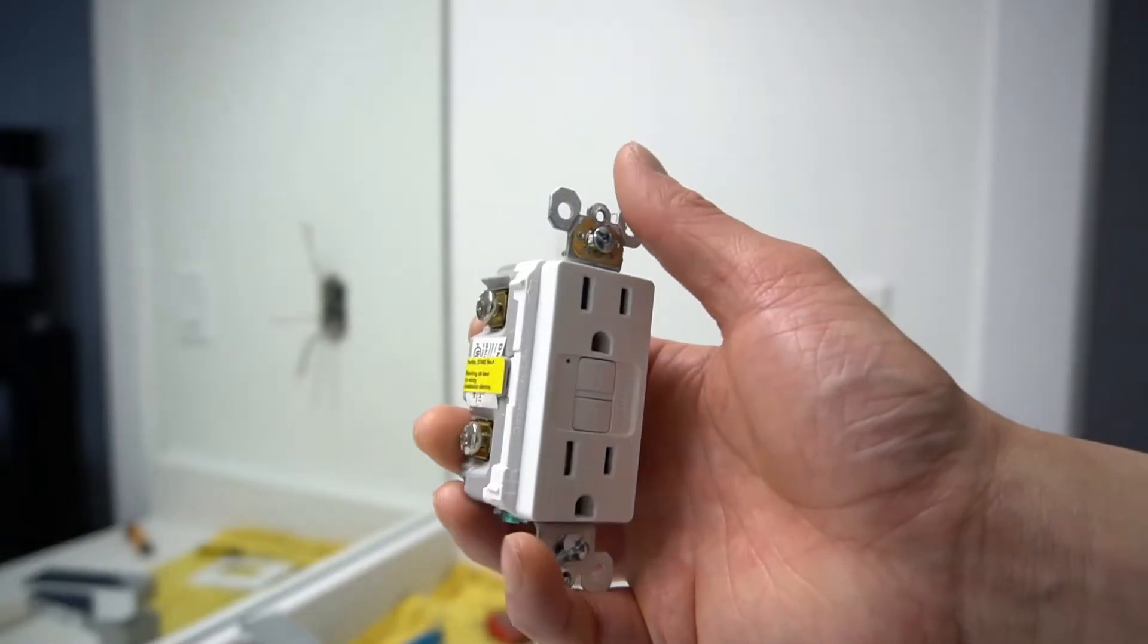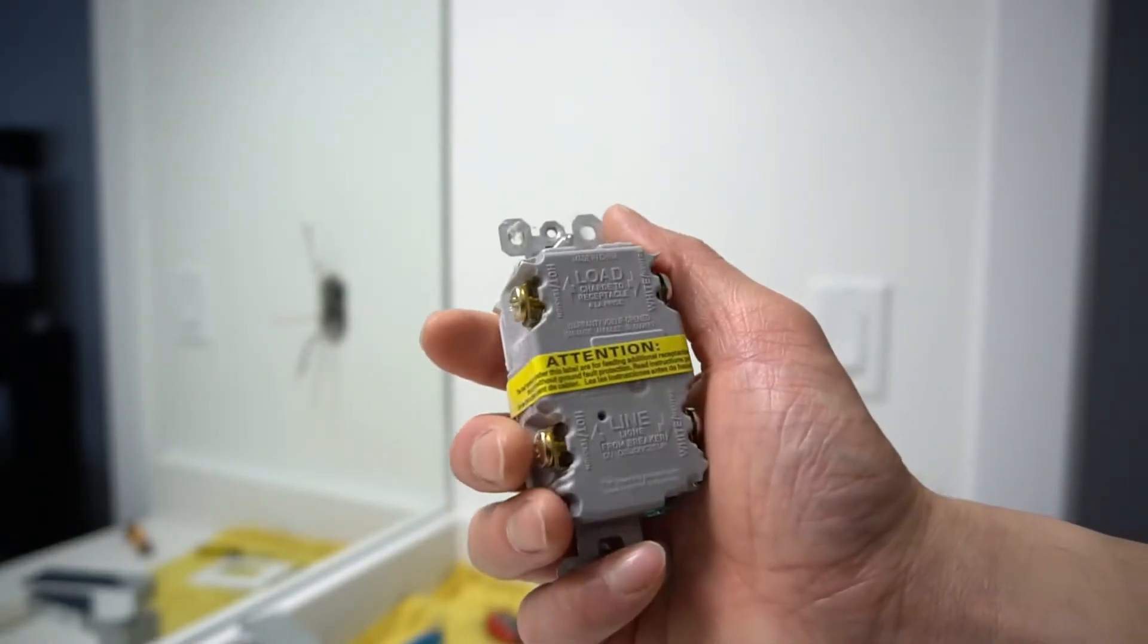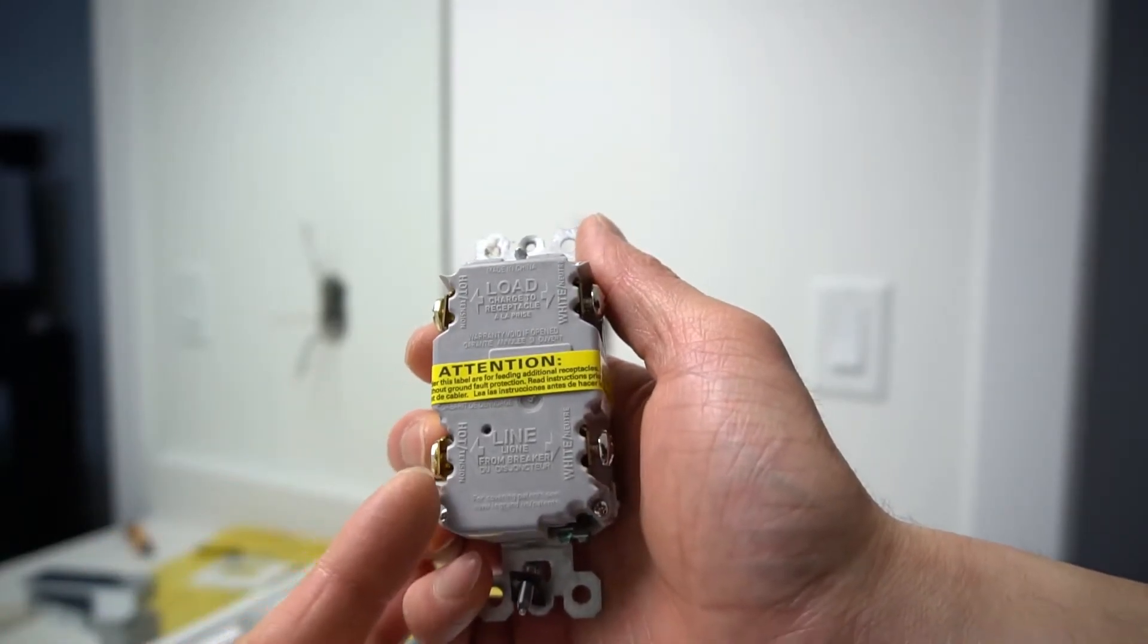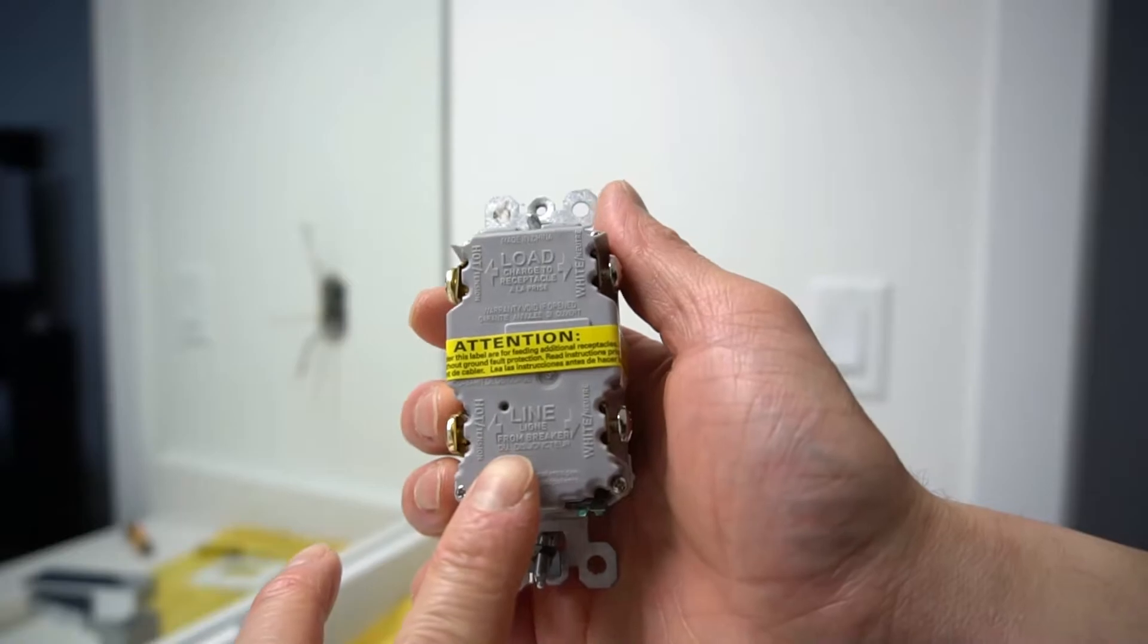Not all GFCI looks the same, but they are very similar. They have a load side and a line side. The line side is the power coming straight from the panel.